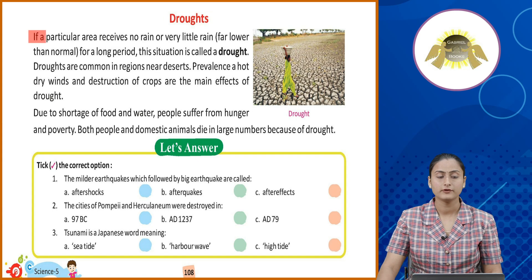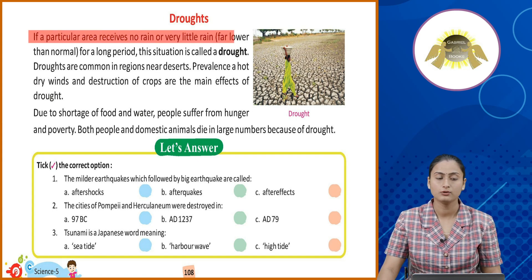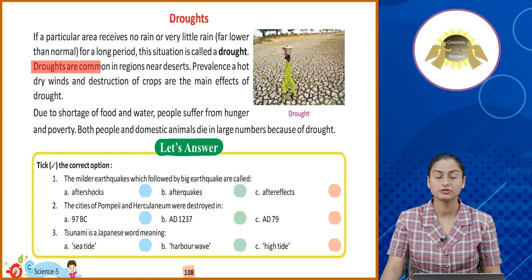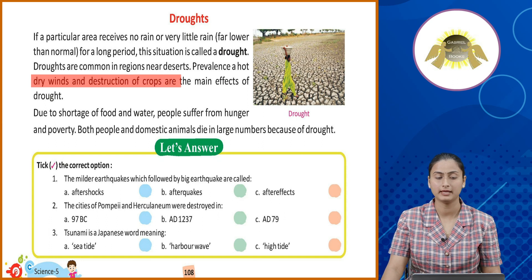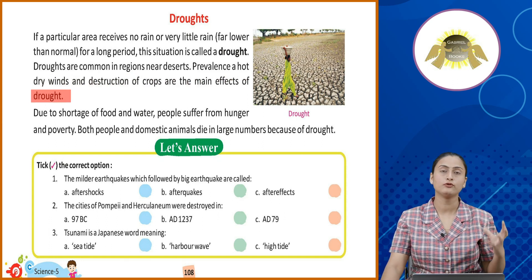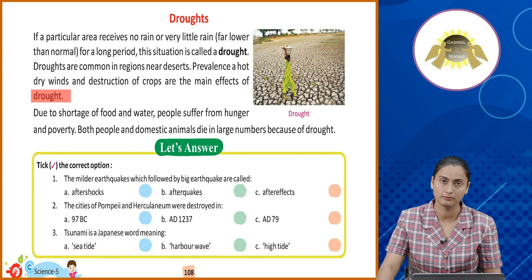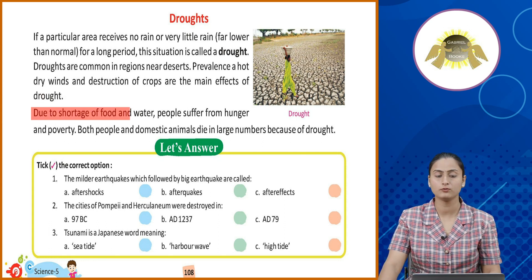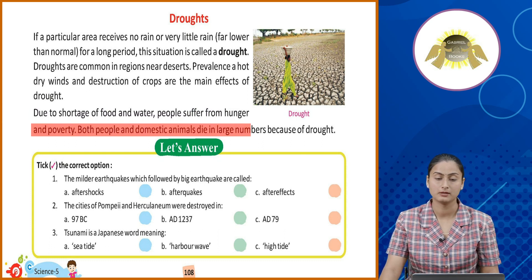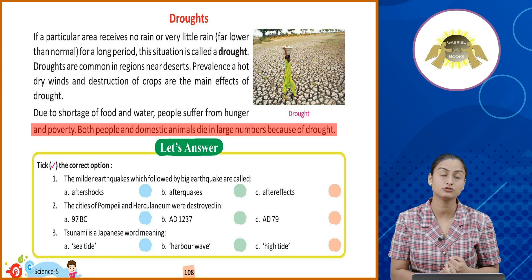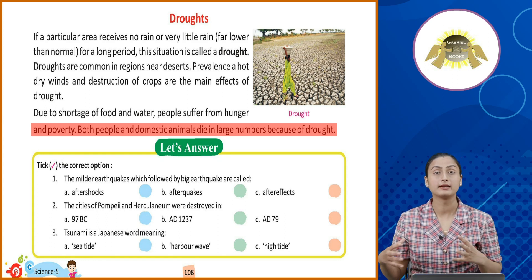Droughts. If a particular area receives no rain or very little rain, far lower than normal, for a long period, the situation is called a drought. Droughts are common in regions near deserts. Prevalence of hot, dry winds and destruction of crops are the main effects of drought. Due to shortage of food and water, people suffer from hunger and poverty. Both people and domestic animals die in large numbers because of drought. Drought wo phenomena hota hai jab kisi ek region mein bilkul bhi rain nahi aati, sukhha par jaata hai, crops kharaab hone lagte hai. Kyunki sukhha par jaata hai, crops sare kharaab ho jaate hai, jo log aur janwar hote hai wo marne bhi lagte hai.